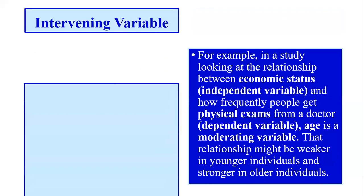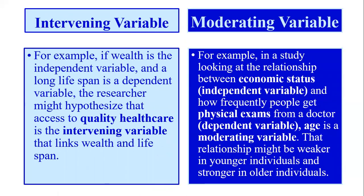Let me give an example with independent variable and intervening variable. I will use a common example and also give one from leadership and management. For example, if wealth is the independent variable and long lifespan is the dependent variable — if we have more wealth then we have a longer lifespan, because we can adopt more luxuries in our daily life routine and beneficial things, because we have more wealth.